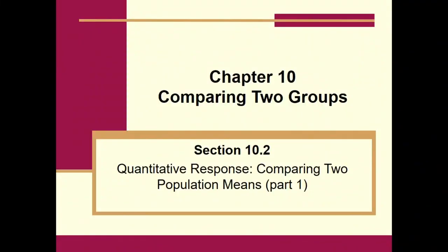Today we're going to look at section 10.2. We're going to be comparing two population means. If the researcher decided to have two groups and wants to compare them, then we have two populations. For example, if somebody wanted to compare all University of Akron males versus all University of Akron females, then we have two very distinct groups and two distinct populations.